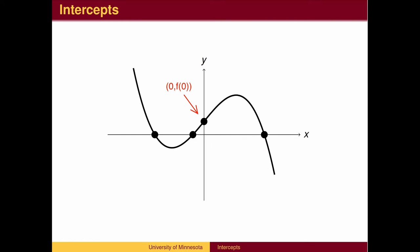The graph crosses the y-axis when the input x equals zero, and crosses the x-axis when the output y equals zero.